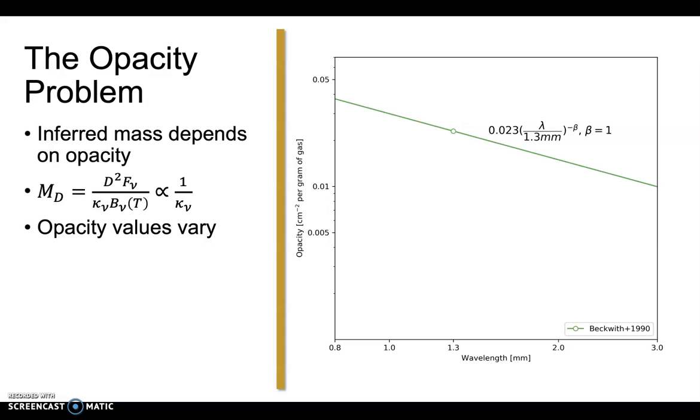If assuming a gas-to-dust ratio of 100, this value is well above the calculated values for the diffuse ISM presented in Draine 2003. The discrepancy is expected because the grains might have some level of grain growth, as we can see in Ossenkopf and Henning's model.